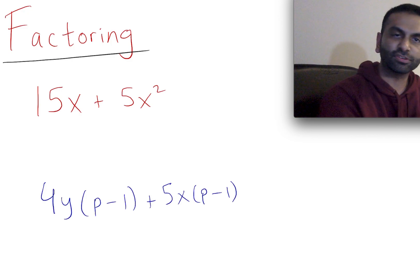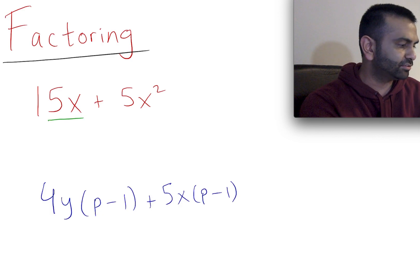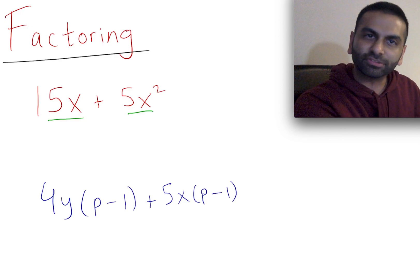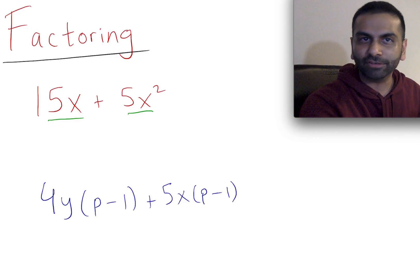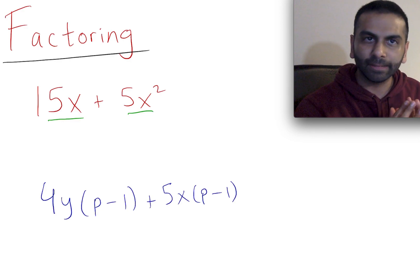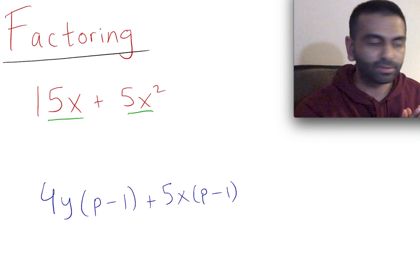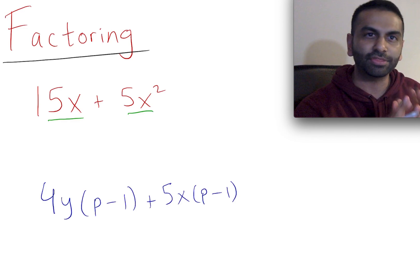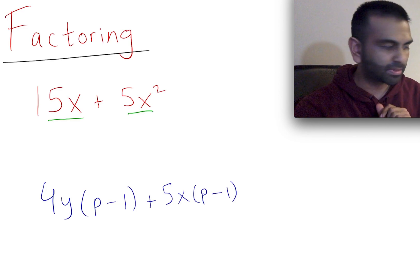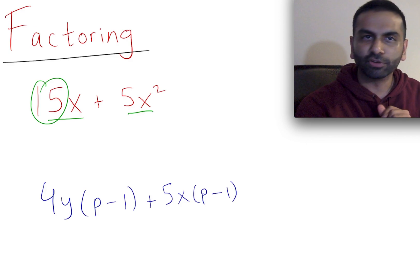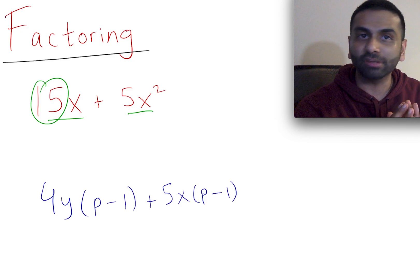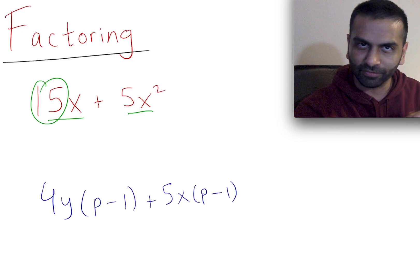Let's look at this first example. Out of these two terms, if we want to factor it out, meaning pull something out, we need to divide. We're going to ask ourselves, what's the largest thing that we can divide from both of these terms so that there's still whole numbers? The first thing to keep in mind is we're always going to think of the coefficient, meaning the number, versus the variable, like the x or the x squared. We're going to think about those separately. First, let's focus on the coefficient.